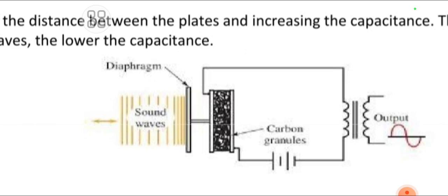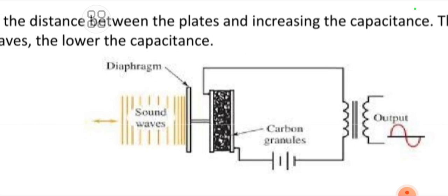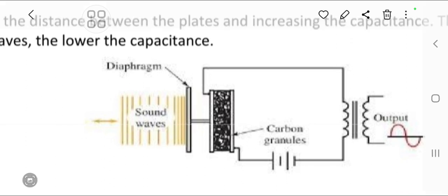It goes in backward direction, so the distance between two capacitor plates decreases and its capacitance increases. Higher the sound waves, higher the capacitance we get, and we get the capacitance at the output. Okay, thank you.